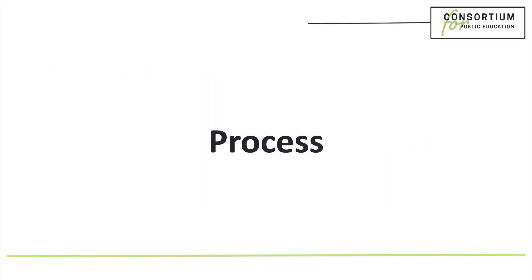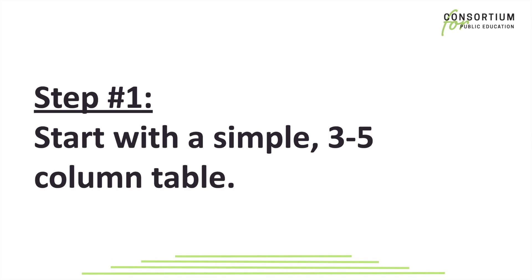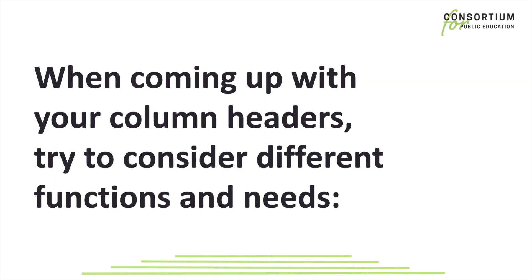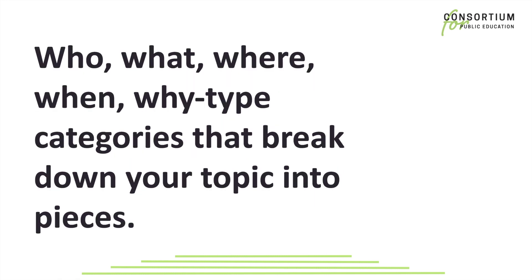So let's talk process. Step 1: start with a simple 3-5 column table. When coming up with your column headers, try to consider different functions and needs — who, what, where, when, why — type categories that break down your topic into pieces.